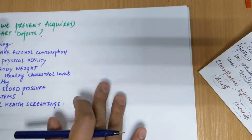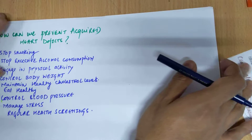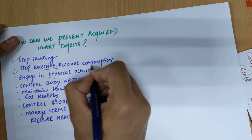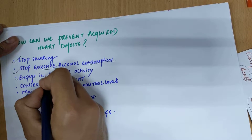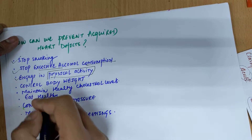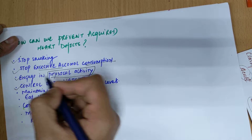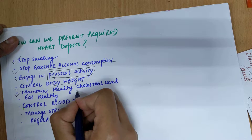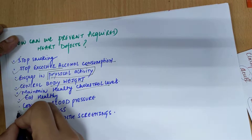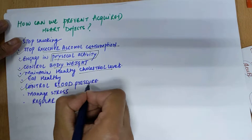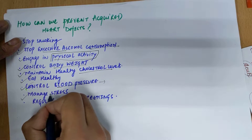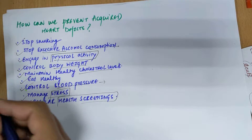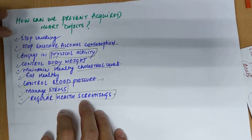To prevent acquired heart defects, a person should stop smoking and stop excessive alcohol consumption. Engage in physical activity for at least 30 to 60 minutes per day. Control your body weight and maintain a healthy cholesterol level. Eat healthy, control your blood pressure, manage your stress, and undergo regular health screenings — do health checkups with your doctor at regular intervals.